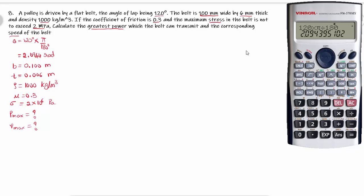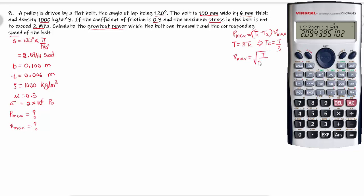We know that Pmax is equal to T1 minus T2 into velocity Vmax. This is the condition for maximum power transmission by the belt: maximum tension T will be equal to 3 times the centrifugal tension Tc.